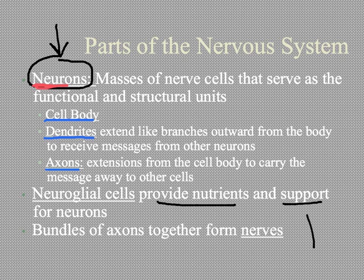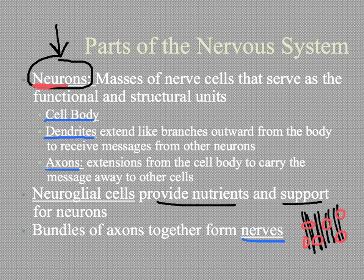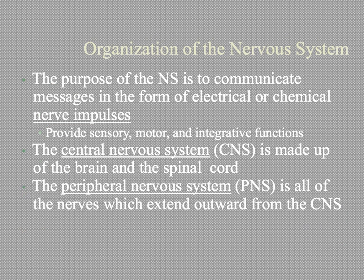When you get a bunch of neurons together with neuroglial cells providing support in the area, those big bundles together are called nerves — and that's what we think of as the parts of our body that help to detect changes in the environment. The nervous system is organized into two categories responsible for detecting changes like temperature or sound, and then responding to those changes.